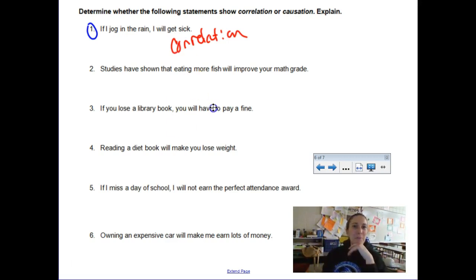Unless you're sitting out in the freezing rain for hours running a marathon and then you never get dry, and you're prone to pneumonia, that would simply be a correlation. Sorry grandma, you're wrong. Studies have shown that eating more fish will improve your math grade. Again, this is a correlation. There would be no way to prove that your improved math grade was contingent on the fact that you ate fish. We might see a trend, that's called a correlation. If you lose a library book, you're going to pay a fine. That is a causation.